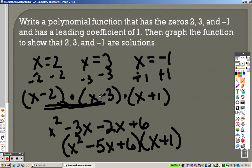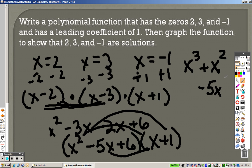I bring down x plus 1 because I didn't use that yet. So now I have to FOIL again. x squared times x, I get x cubed. x squared times 1 is plus x squared. Negative 5x times x is negative 5x squared. Negative 5x times 1 is negative 5x. And 6 times x is 6x. 6 times 1 is 6.